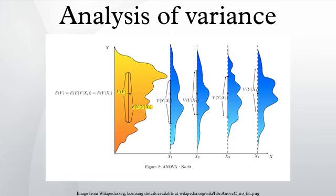In the ANOVA setting, the observed variance in a particular variable is partitioned into components attributable to different sources of variation. In its simplest form, ANOVA provides a statistical test of whether or not the means of several groups are equal, and therefore generalizes the t-test to more than two groups.